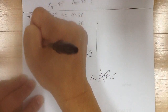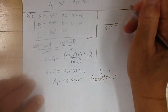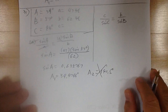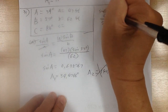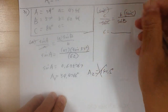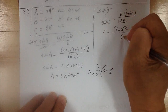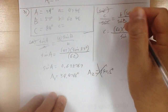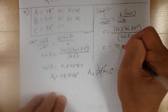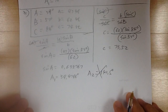To find C, use C over sine C equals B over sine B. Multiply by sine C. So C equals 62 times sine of 84 degrees over sine of 57 degrees. You get C equals 73.52, so rounded to 74 feet. That's it for number 31.